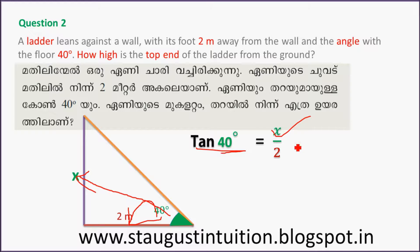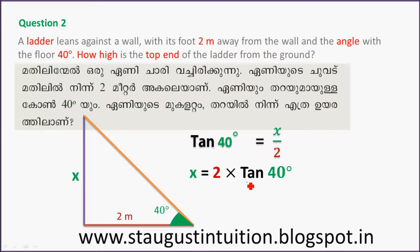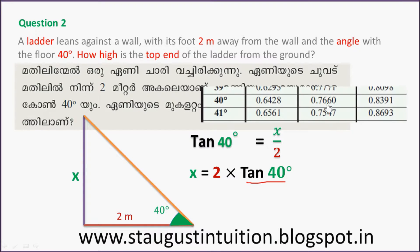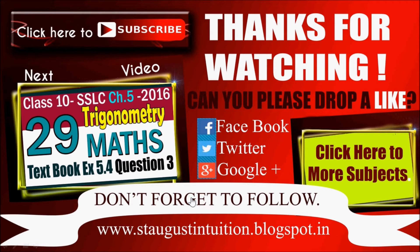Tan 40 equal to x divided by 2, so x is equal to 2 into tan 40. Tan 40 is equal to 0.8391, therefore x is equal to 1.6782. That's all. Thank you.